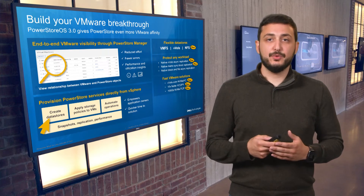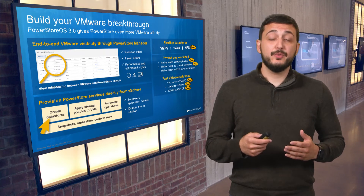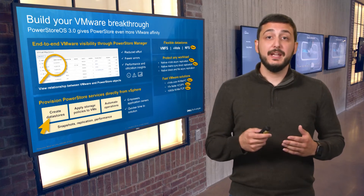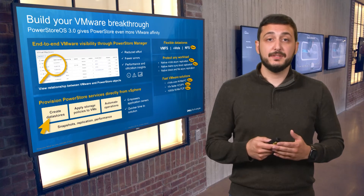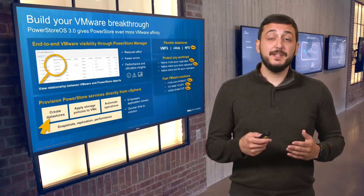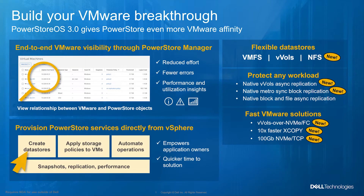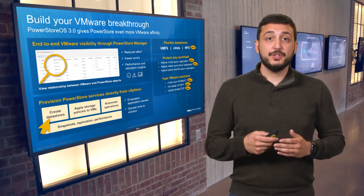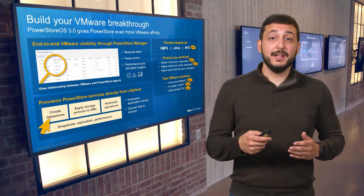New NFS Datastore support enables high-performance VMware file solutions. PowerStore now supports any VMware workload, including VMFS, NFS, and VVOLs. New native VVOL async replication integrates with SRM for orchestrated failover at both the compute and storage levels. This is supported on all models, including PowerStore 500. We're also introducing new native Metro block replication for ESXi hosts and new file async replication, so you can protect both VMware file and block workloads.